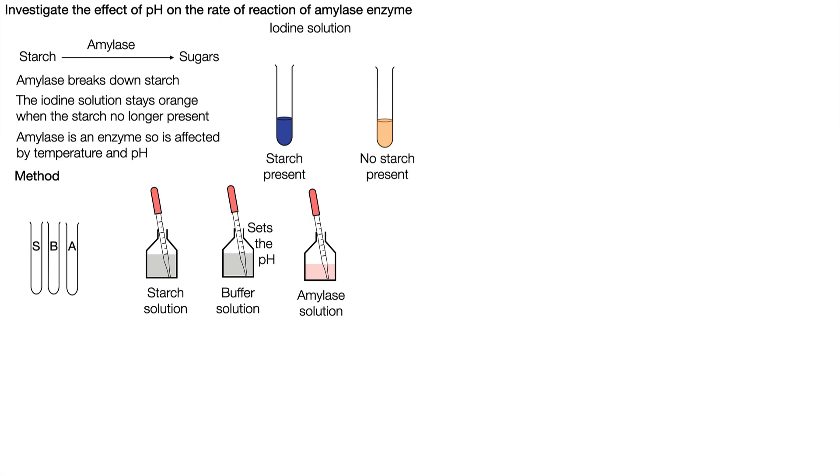We can then label our test tubes as starch, buffer, and amylase. And we can put some starch solution into our starch test tube, some buffer solution into our buffer test tube, and amylase into our amylase test tube.